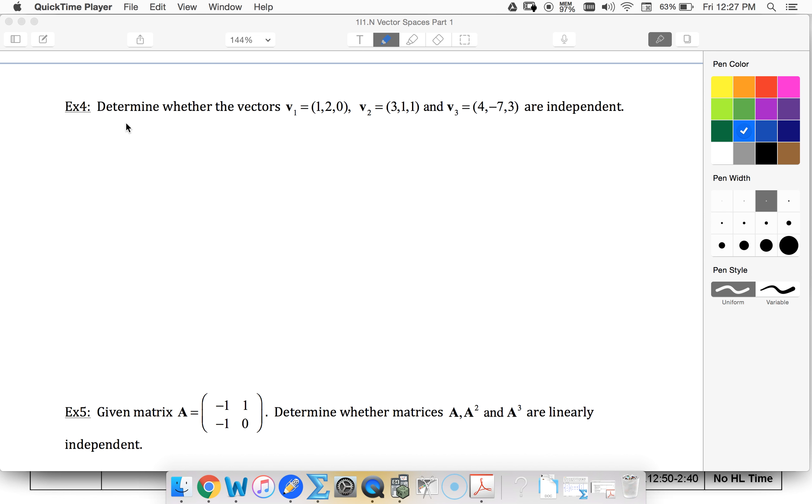All right, so if I'm testing linear independence, I'm going to set up an equation, a homogeneous equation. So 1, 2, 0; 3, 1, 1; 4, -7, 3, times some sort of constants. So I'm looking at linear combination.